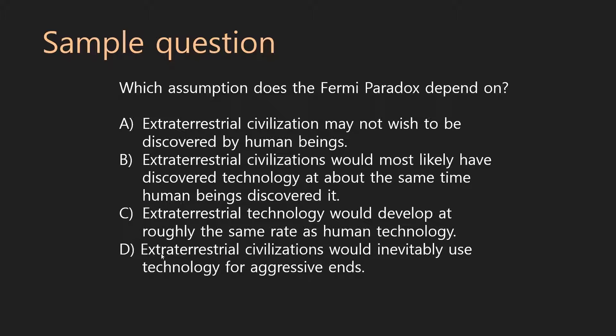So C looks good. Let's double-check D: extraterrestrial civilizations would inevitably use technology for aggressive ends. Totally and utterly irrelevant — aggressive? It's not even mentioned. So D is wrong. C must be the answer. It was a little bit challenging. Assumption questions can be challenging because they rely on logic. Don't panic if you're struggling with it — you'll get it with a bit more practice. And the good news is, remember, there's probably not more than one question like that in the test.